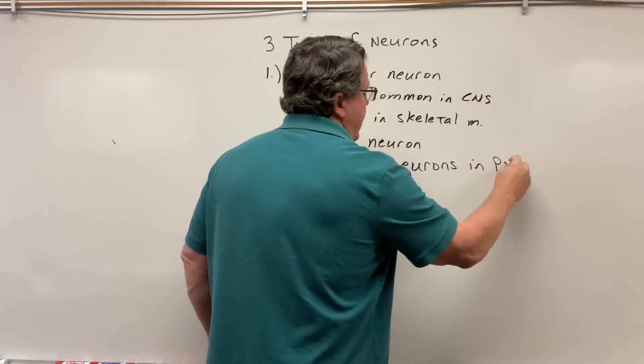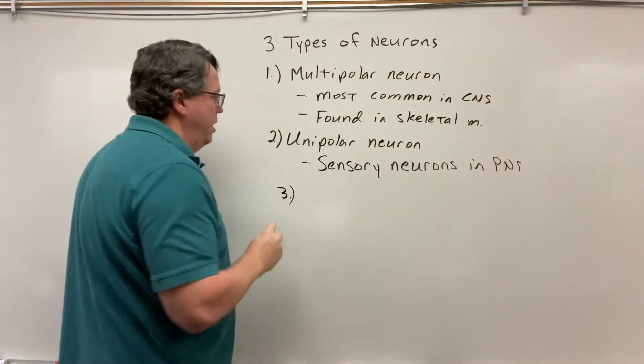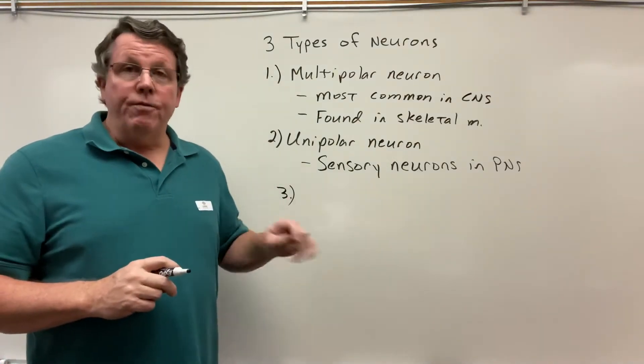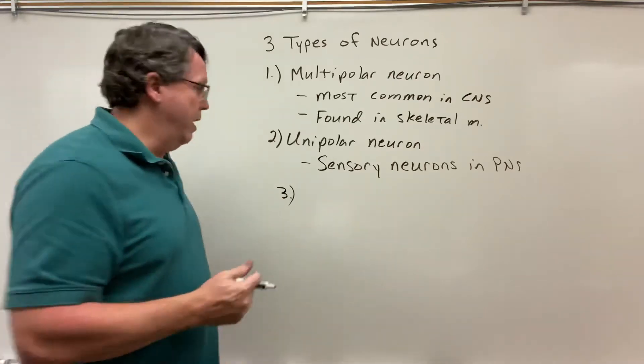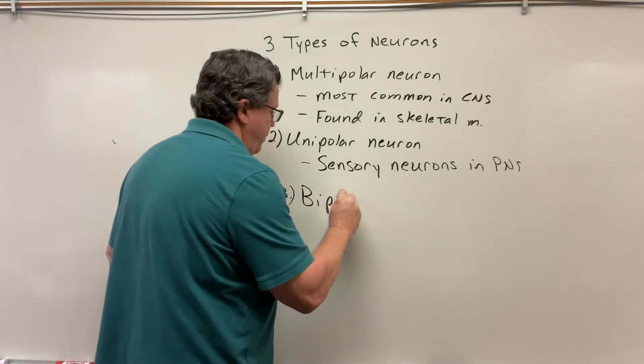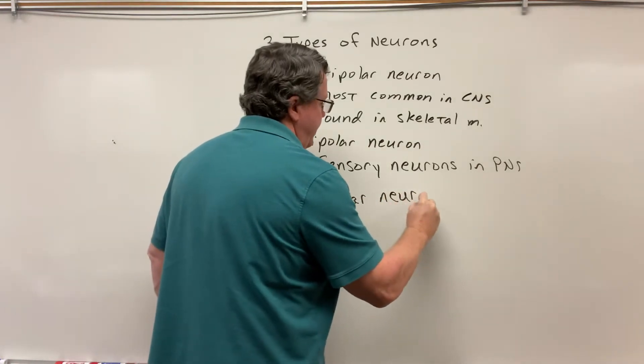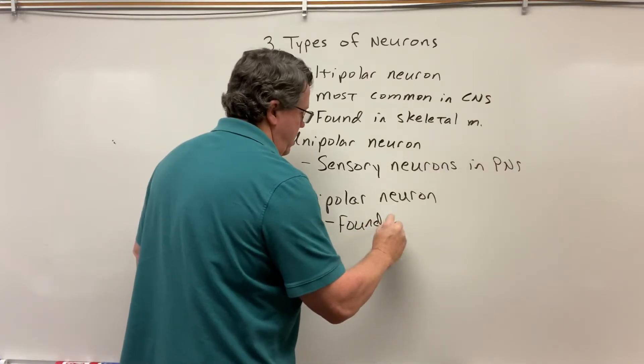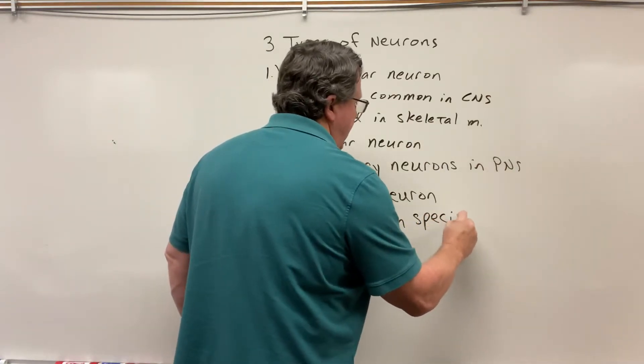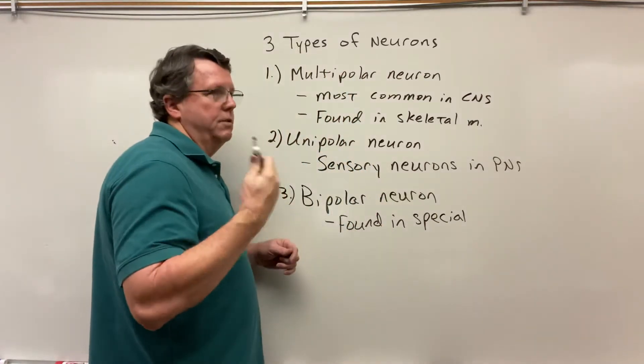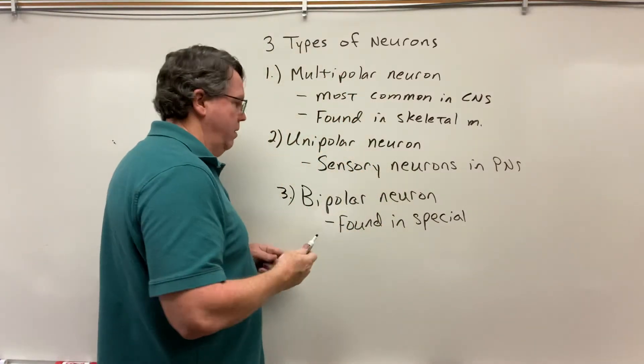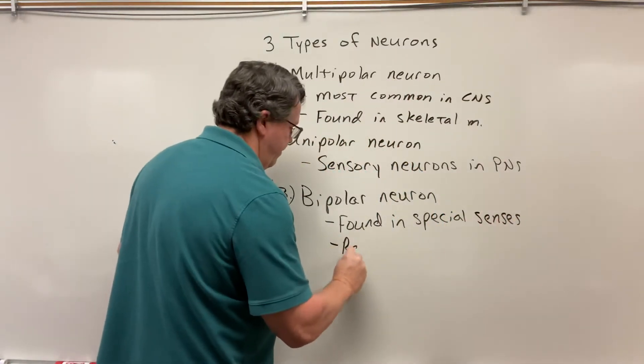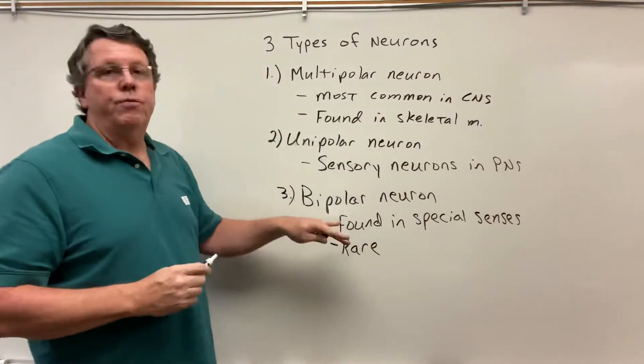And then the third type that we're going to look at is called a bipolar neuron. These are very rare and they're found in special senses such as sight, smell, taste, and hearing. So there's the three types.